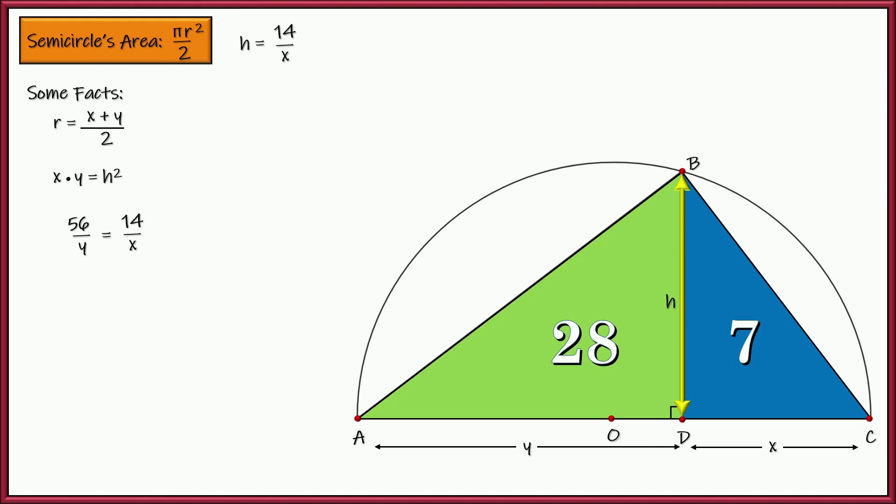See if we can express x in terms of y or y in terms of x. You ready? Let's go ahead and cross multiply and let's go ahead and divide by 14 so we can see that y is equal to four times x. All right, so now we know this is four x. Let's go ahead and put four x right there. And we know this is y is four x. Let's go ahead and put four x right there.